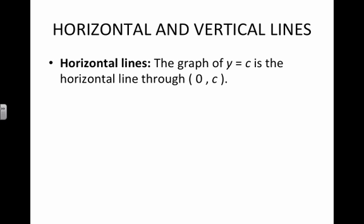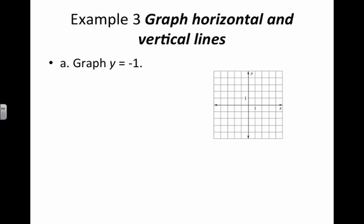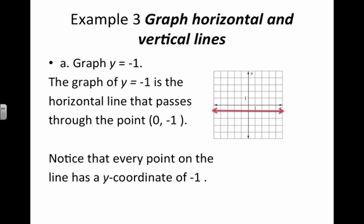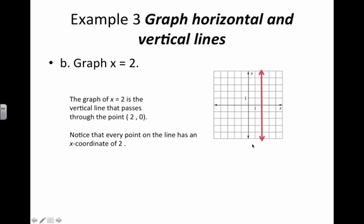There are a couple of special cases where you have only x or only y. You get a horizontal line whenever you have y equals just a constant — the graph of y equals c is the horizontal line through 0, c. A vertical line comes from x equals c, and it's the vertical line through c, 0. For example, y equals negative 1 is a horizontal line passing through 0, negative 1, and x equals 2 is a vertical line passing through 2, 0.